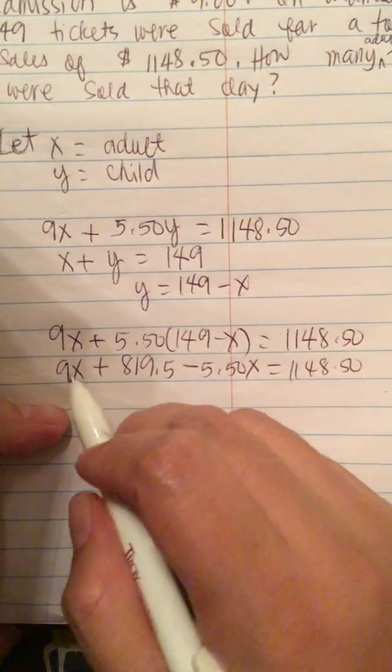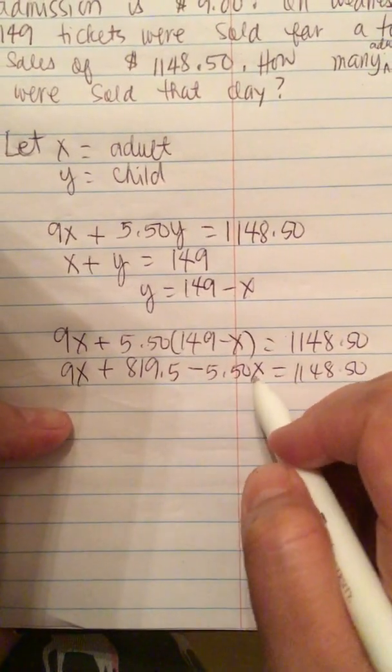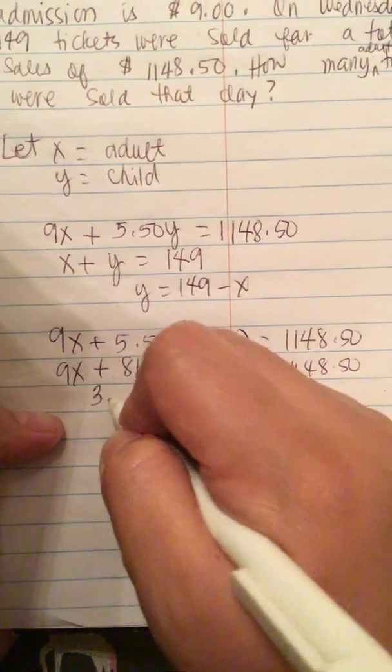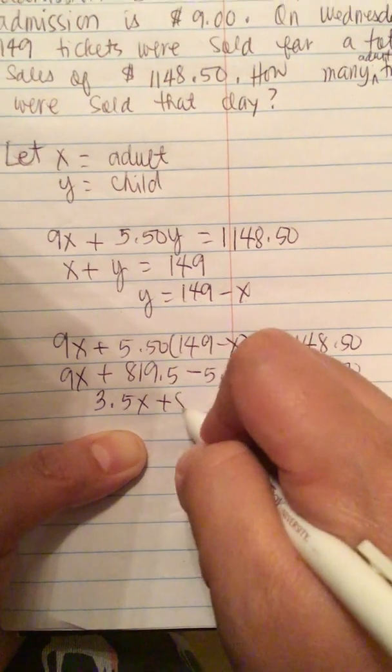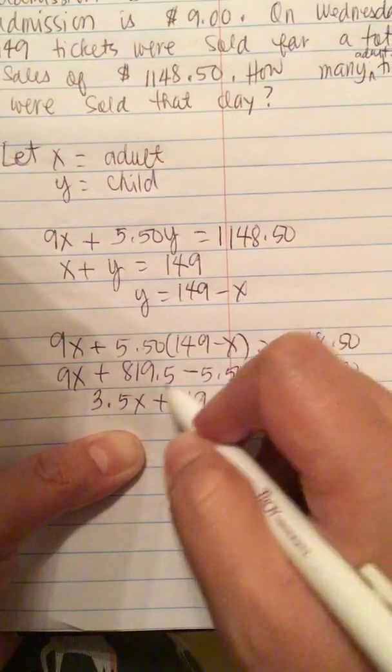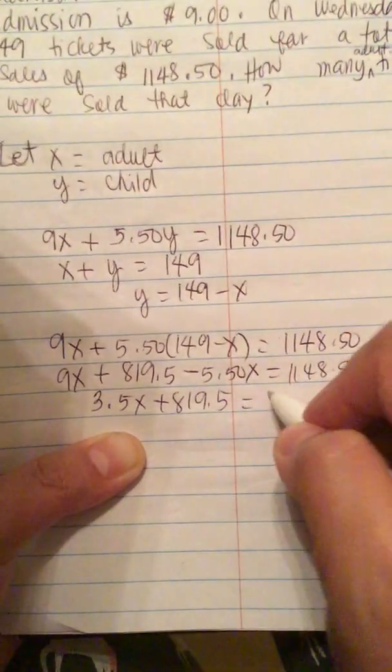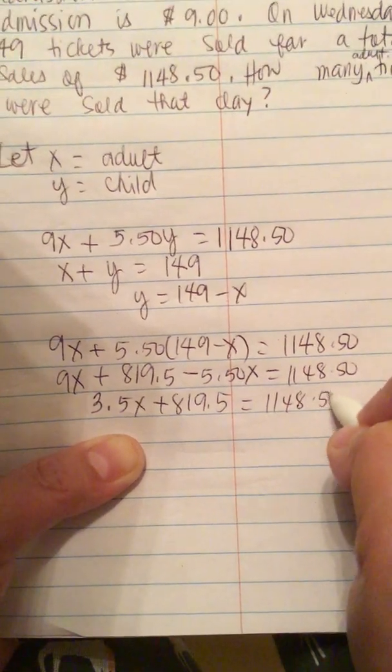We combine like terms. 9X minus 5.50X equals 3.50X plus 819.50 equals $1,148.50.